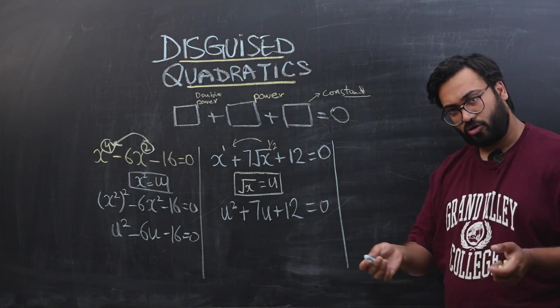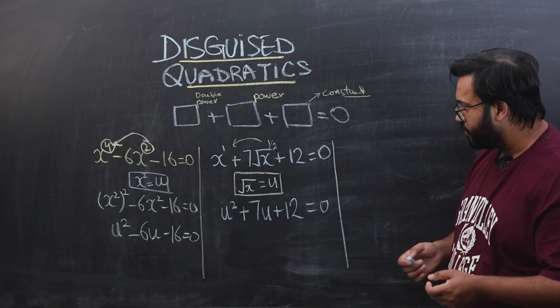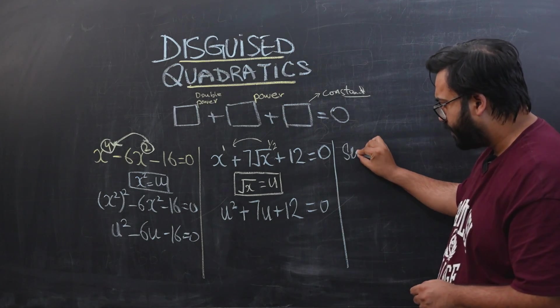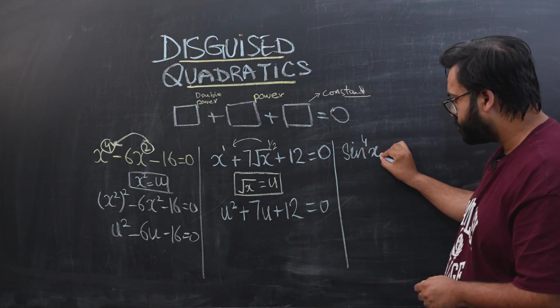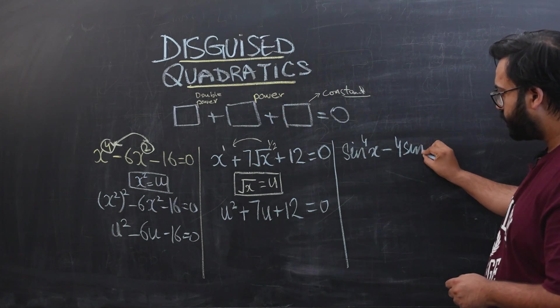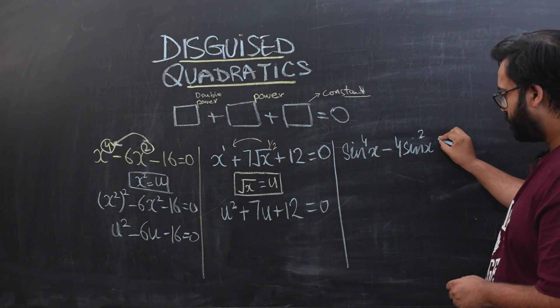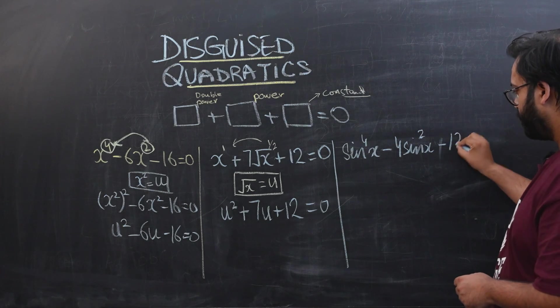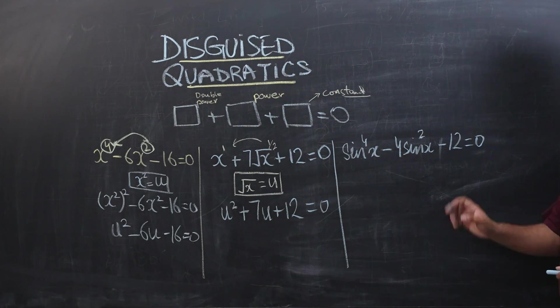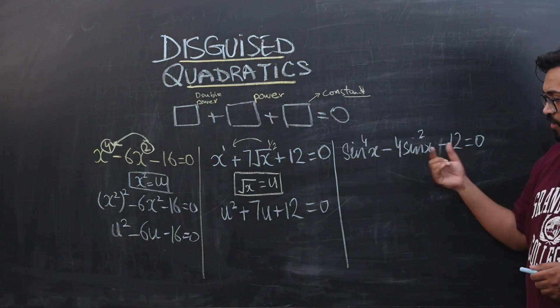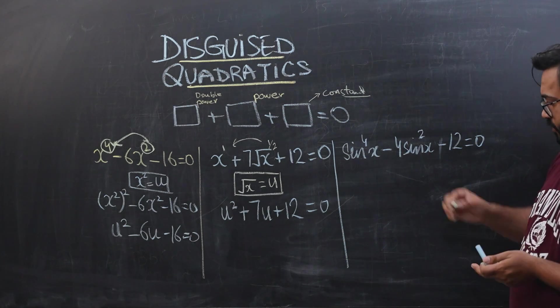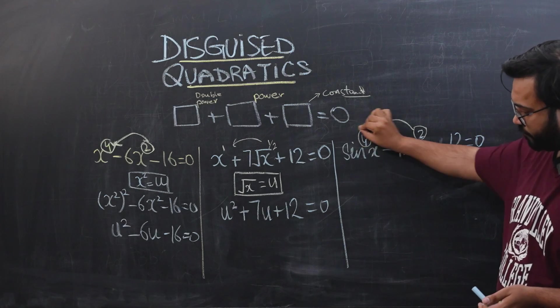Similarly, we see this sort of pattern in trigonometry as well. You guys are used to the idea. For example, I'm going to write a complicated one. Sin to the power 4x minus 4 sin squared x minus 12 equals zero. Now, you guys can see clearly what is happening. It's a three-term equation. For a three-term equation, we have a constant over here. We have some power of x on the component over here, and the double power is on the first term. We can see the pattern follows.